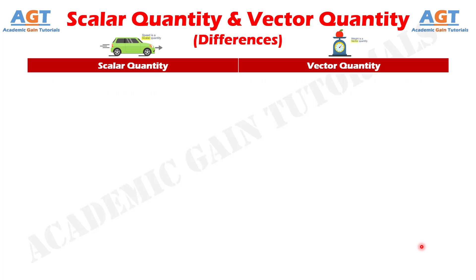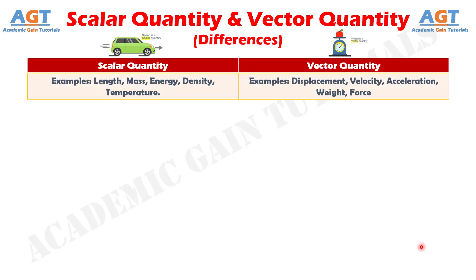And difference number six: few examples of scalar quantity are length, mass, energy, density, temperature, whereas few examples of vector quantity are displacement, velocity, acceleration, weight, force.